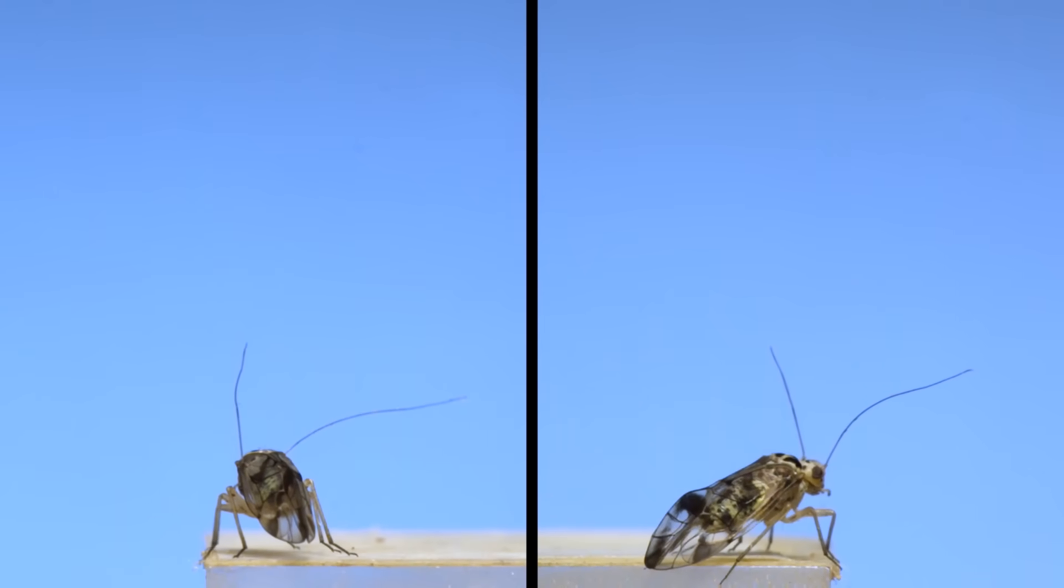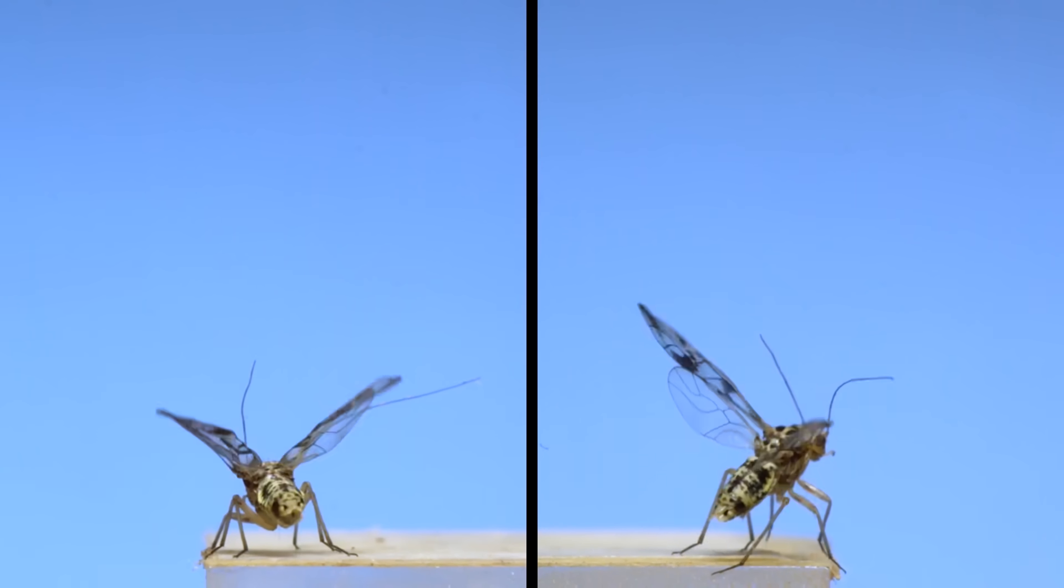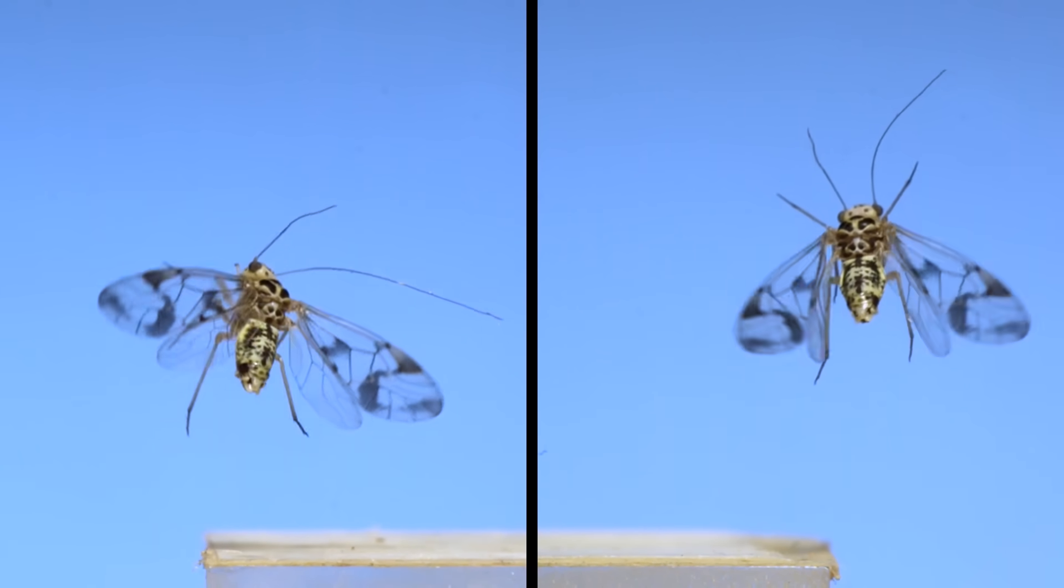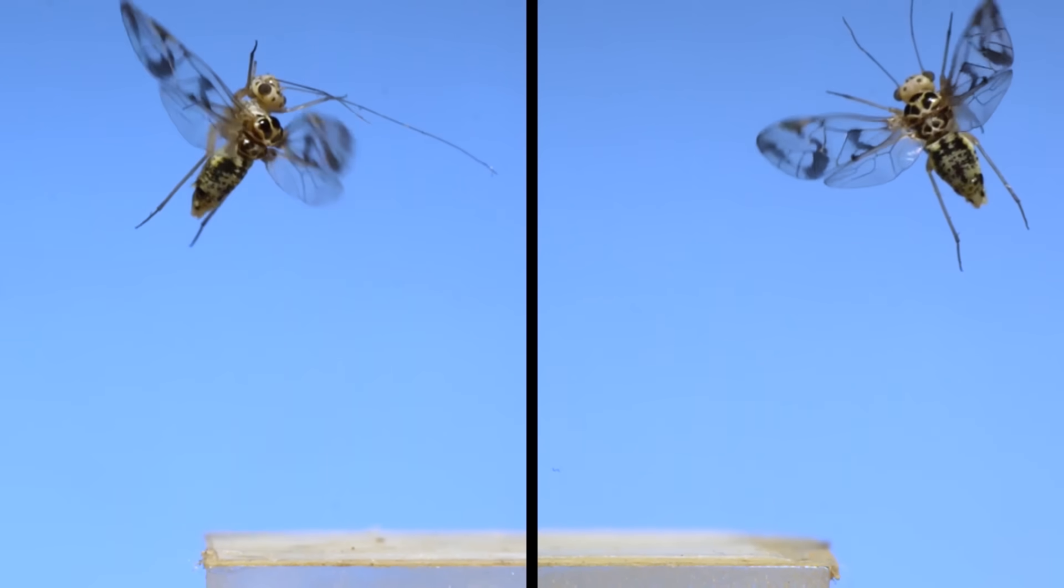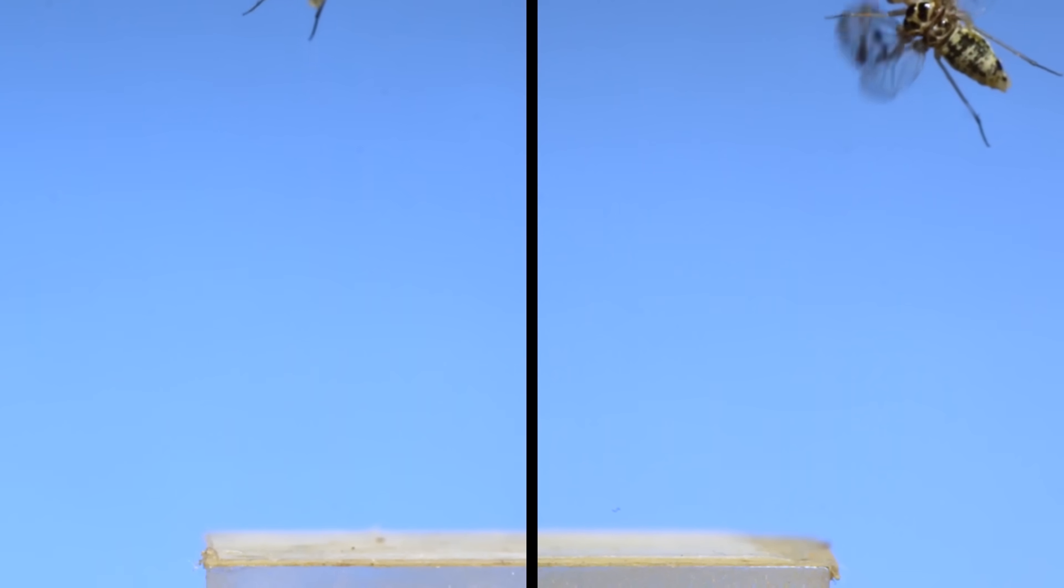And what surprised me the most is how talented they are at flying. I love how right before they take off, they raise their wings and crouch down, then combine a jump with a wing flap to get into the air. Of all the insects I filmed, I never would have guessed that bark lice would be among the most coordinated.